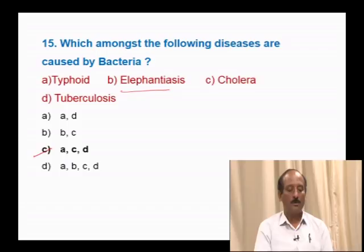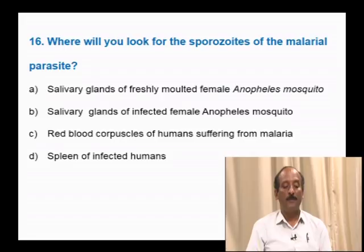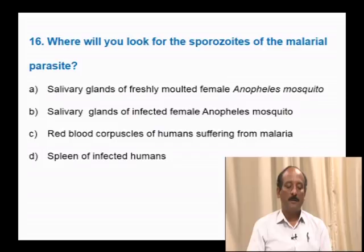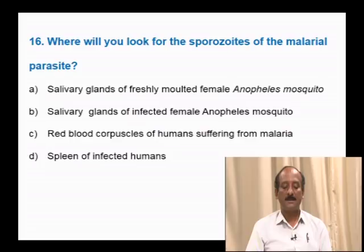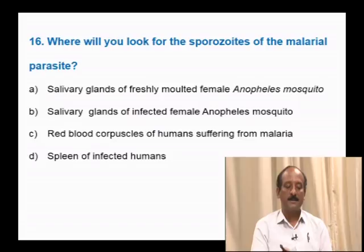Question number 16: Where will you look for the sporozoites of the malarial parasite? Options: salivary glands of freshly moulted female Anopheles mosquito; salivary glands of infected female Anopheles mosquito; red blood corpuscles of humans suffering from malaria; spleen of infected humans. Sporozoites are the infecting stage of malaria parasite to humans. They are stored in the salivary glands of the infected female Anopheles mosquito. The correct answer is option B.